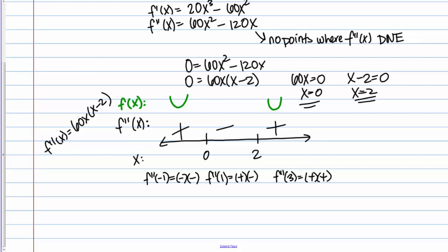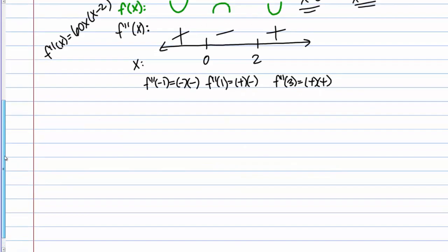Then when the second derivative is negative, it's going to be concave down, so a shape something like this. Now we have the information we need to write down our answer. We were asked where were the intervals of concave up and concave down, and also for any inflection points.